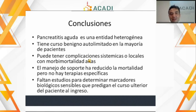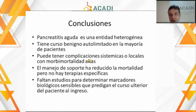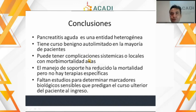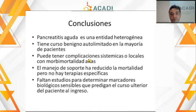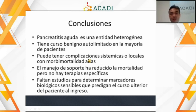Para concluir, la pancreatitis aguda es una entidad heterogénea con un curso benigno autolimitado en la gran mayoría de los pacientes; en un porcentaje bajo, alrededor del 10%, pueden tener complicaciones sistémicas o locales que generan una morbilidad alta. El manejo de soporte ha reducido la mortalidad claramente, pero no tenemos todavía medicamentos específicos que modulen la inflamación o la autodigestión del páncreas. Faltan estudios para determinar marcadores biológicos que predigan el curso de la enfermedad. Muchas gracias.